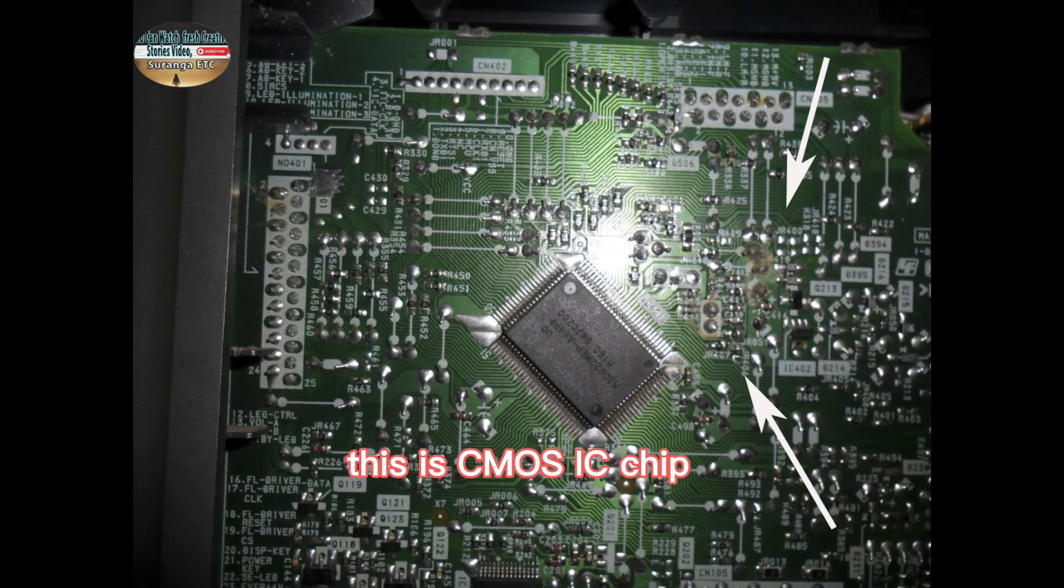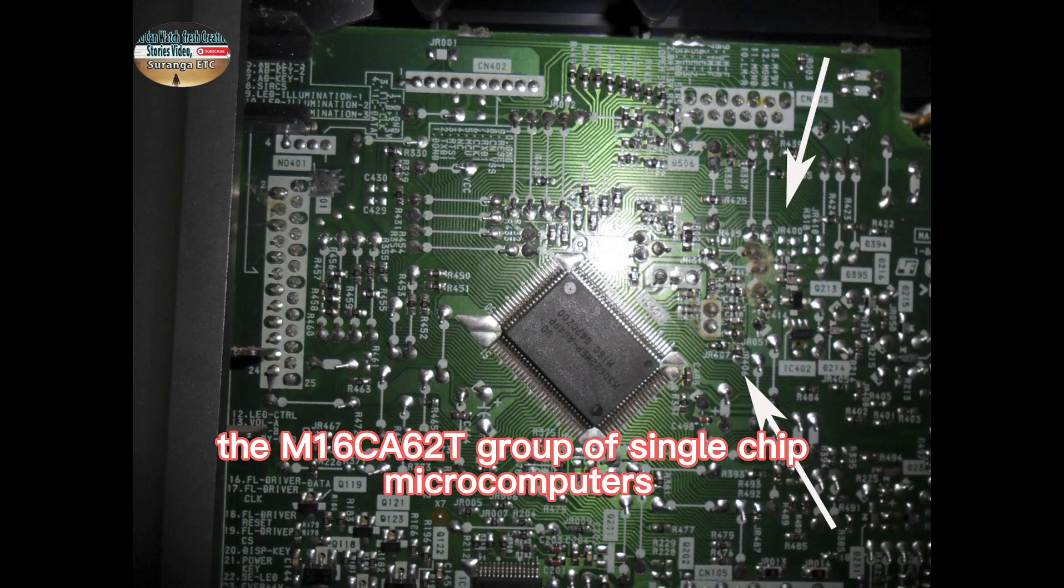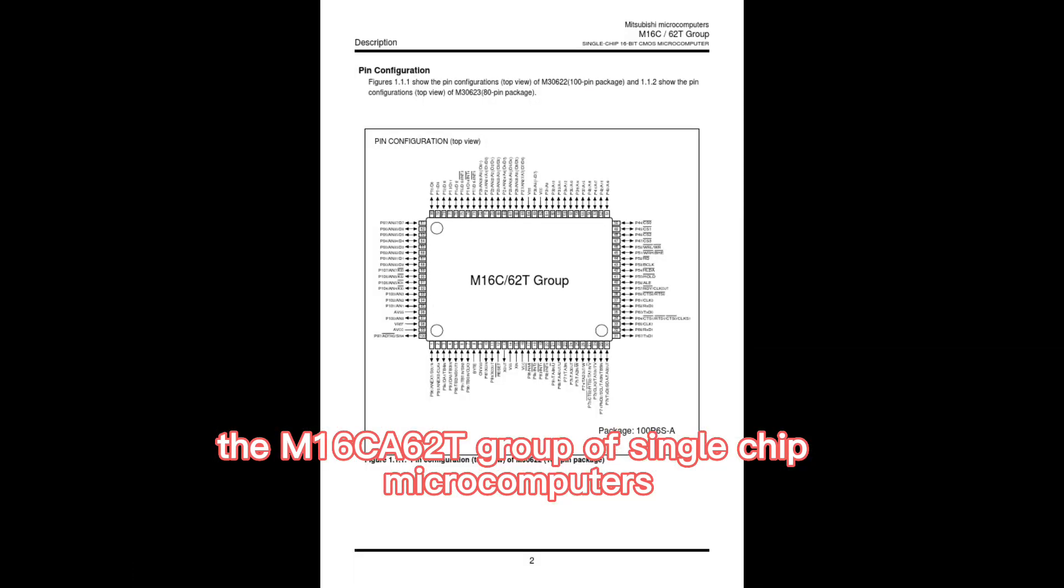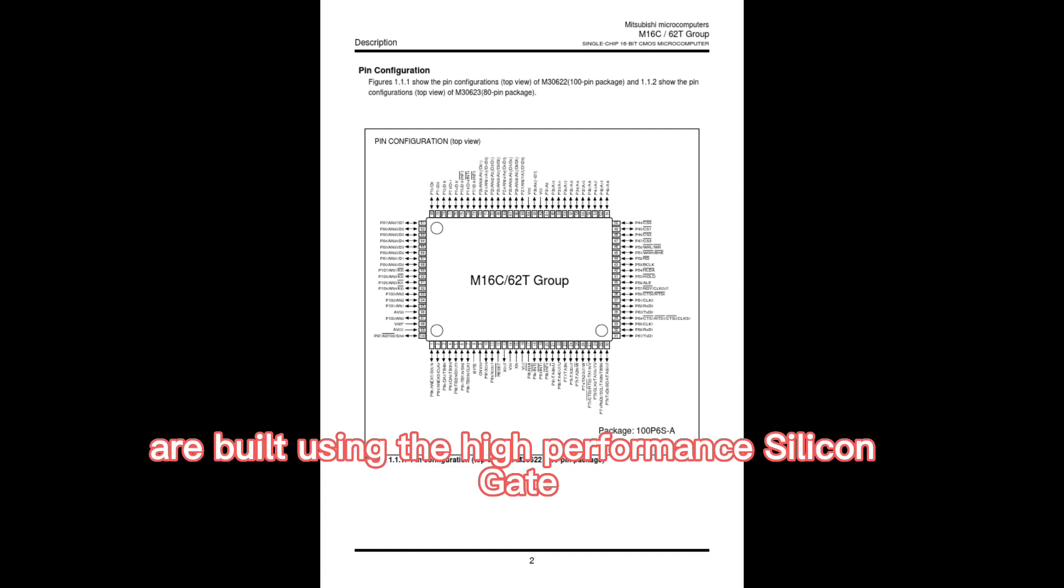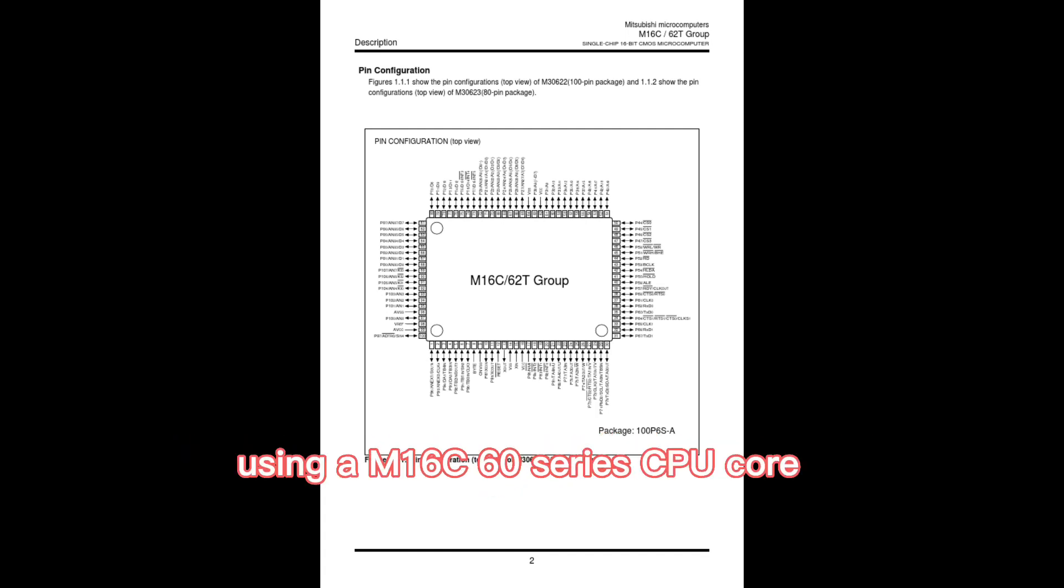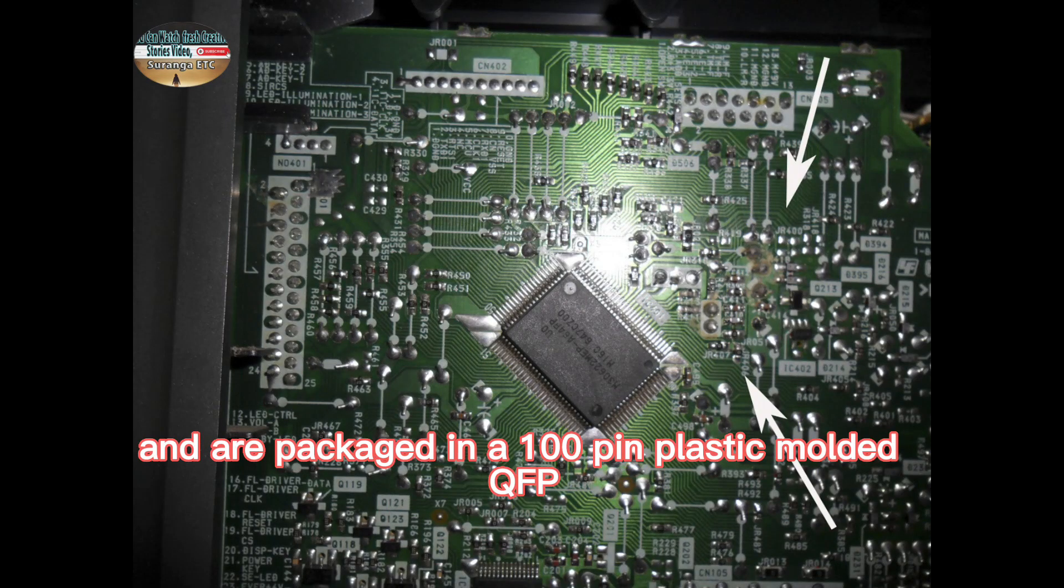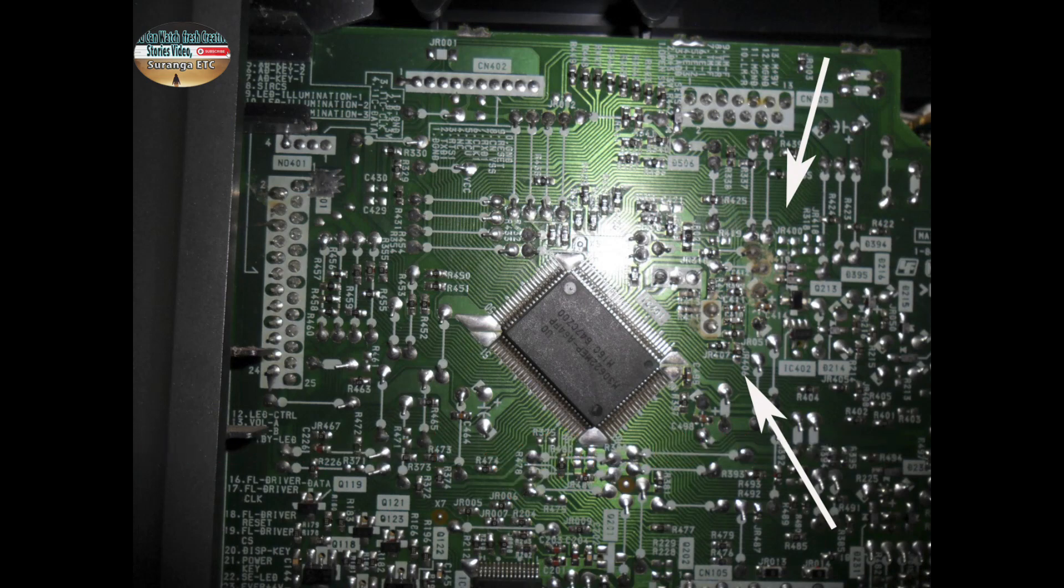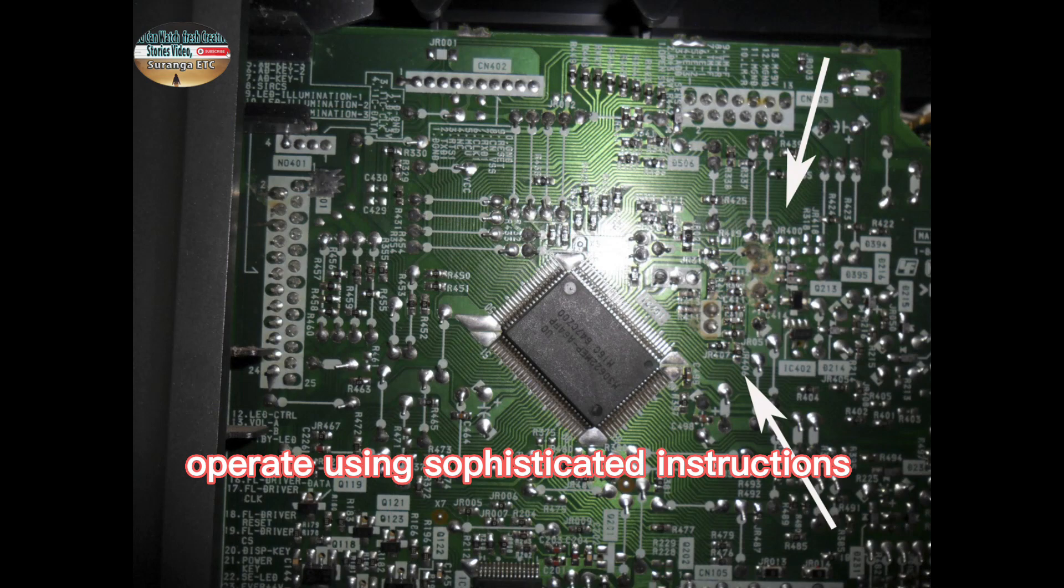This is CMOS IC chip. I checked IC pin path, connection is okay. The M16C-62T group of single chip microcomputers are built using the high performance silicon gate CMOS process using AM16C 60 series CPU core and are packaged in a 100 pin plastic molded QFP. These single chip microcomputers operate using sophisticated instructions featuring a high level of instruction efficiency.